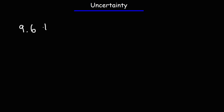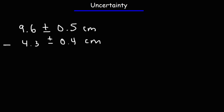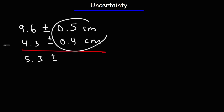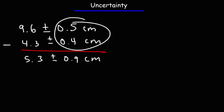Let's illustrate this with an example to show why this works. We have 9.6 plus or minus 0.5 centimeters, and we subtract 4.3 plus or minus 0.4 centimeters. So 9.6 minus 4.3 is 5.3, and we add the uncertainty: 0.5 plus 0.4 gives us 0.9. If we were to subtract the uncertainties instead, we'd get only 0.1, which is smaller and incorrect.